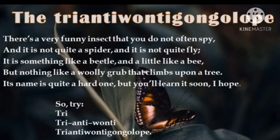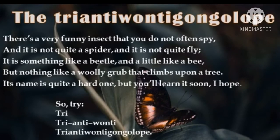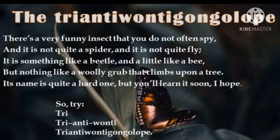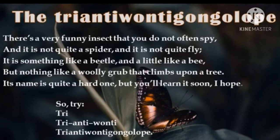So students, in the first stanza you can see that the poet has tried to describe the look — the appearance of the insect, how it looks. It is really funny. You do not search for it often. It does not look like a spider. It does not look like a fly. But it is a little like a beetle and a little like a bee. But it also doesn't look like a caterpillar. So the poet has tried to describe the appearance of the insect in a funny way.